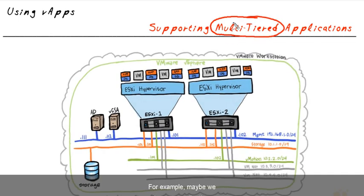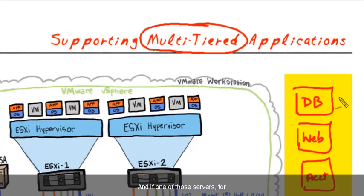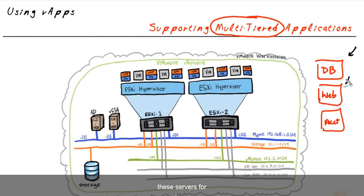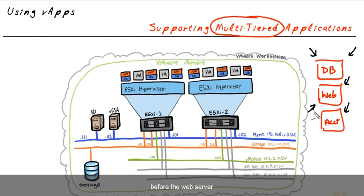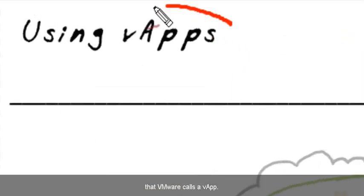For example, maybe we have an application that requires a database server, a web server, and an accounting server. If one of those servers — the database server or the web server — isn't running, the whole application is not going to function. In addition, if we're bringing up these servers for the first time, it's very likely there is an order they have to be brought up in. When we have applications like that, where there are multiple servers that are interrelated, we can put them all into a container that VMware calls a VApp.